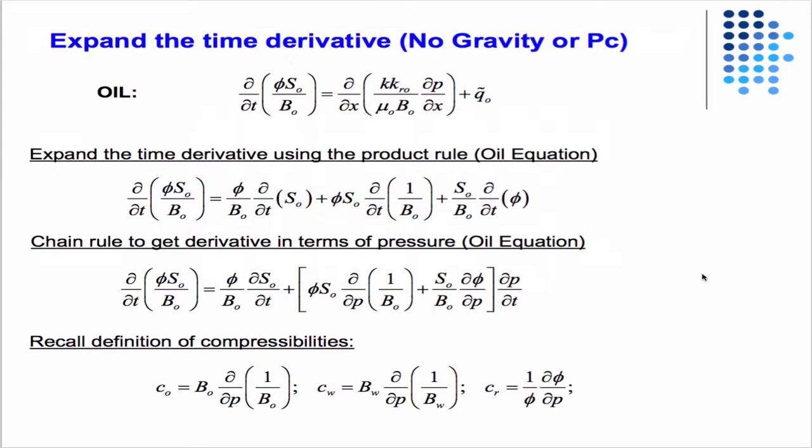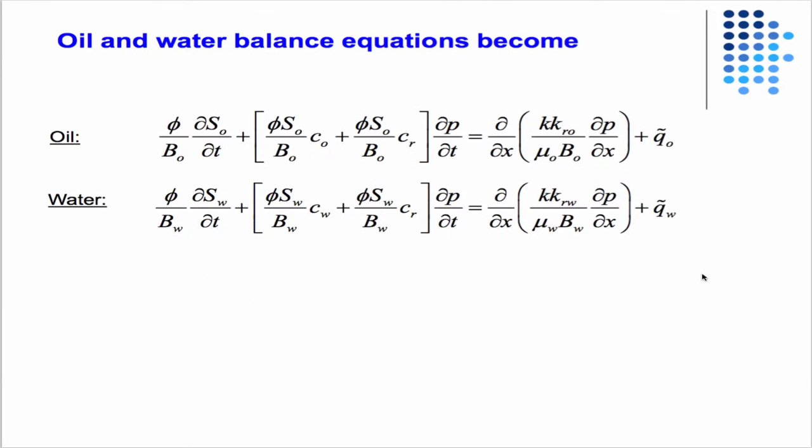We start with the oil equation alone and do some manipulations to it. We expand the time derivative using the product rule, then use the chain rule to get things in terms of pressure. We can identify some terms here that we know to be compressibility of oil and water and rock from petrophysics.